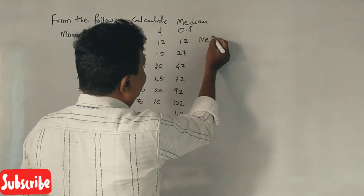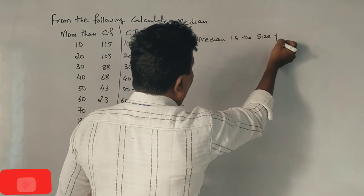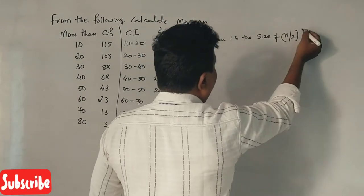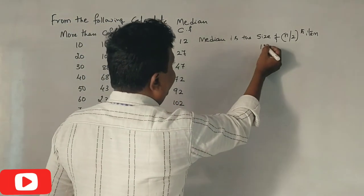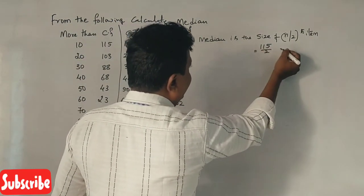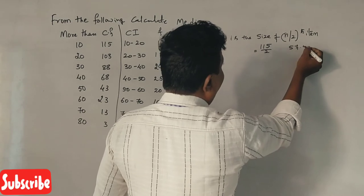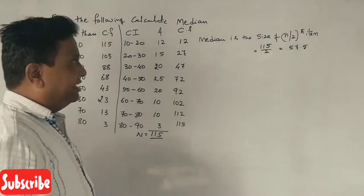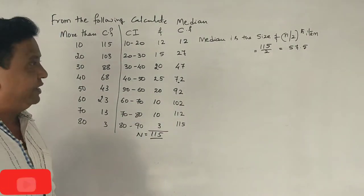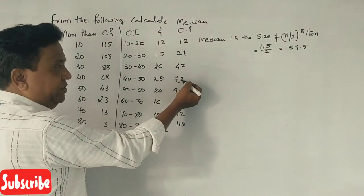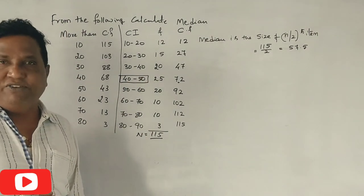Median is the size of n by 2. N is 115, so n by 2 is 57.5. Cumulative frequency is 48. 48 to 72. 40 to 50 class. So 57.5 is falling in class interval of median class interval of 40 to 50.